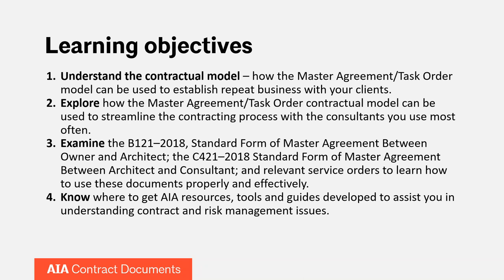Third, we're going to examine in detail the B-121, which is the standard form of master agreement between owner and architect, and the C-421, the standard form of master agreement between architect and consultant. We will look at the relevant service orders that apply to both and help you understand how to use these documents properly. We'll also look at the differences between these documents and the B-101. Lastly, we're going to help you know where to get AIA resources, tools, and guides to assist you in understanding contract and risk management issues.